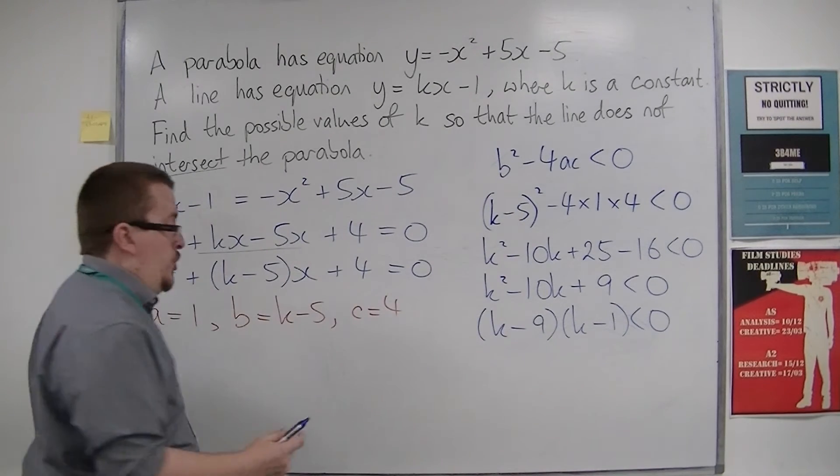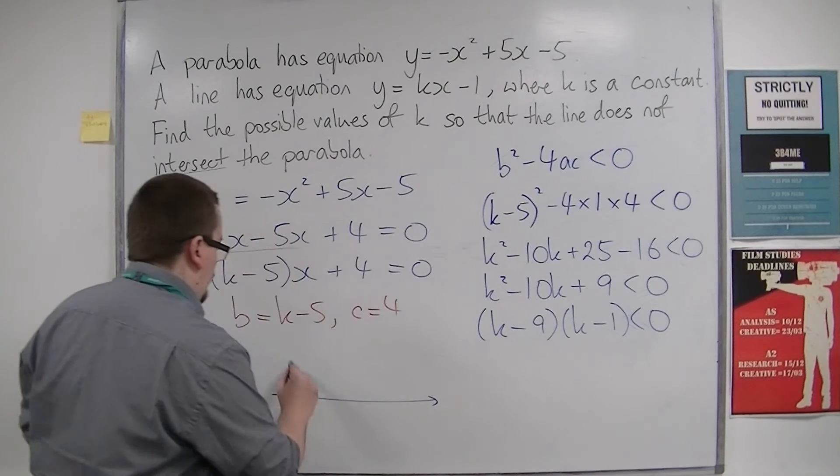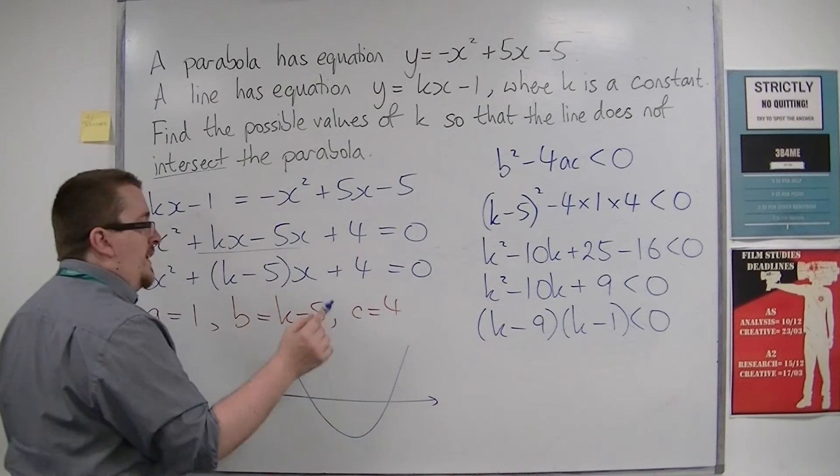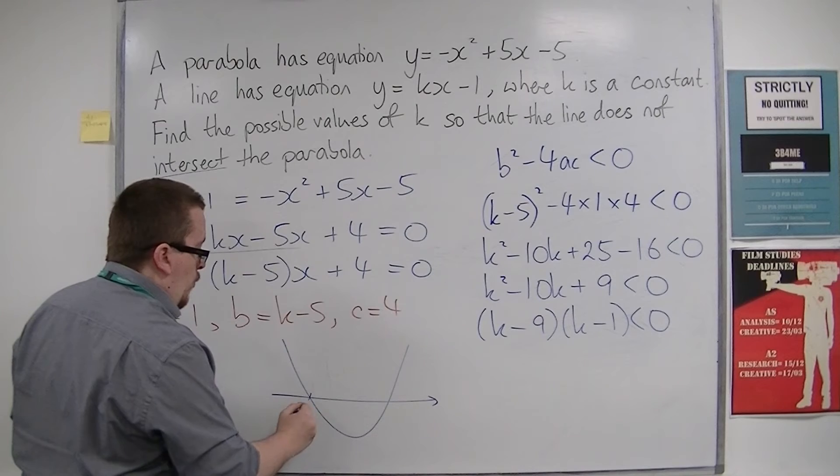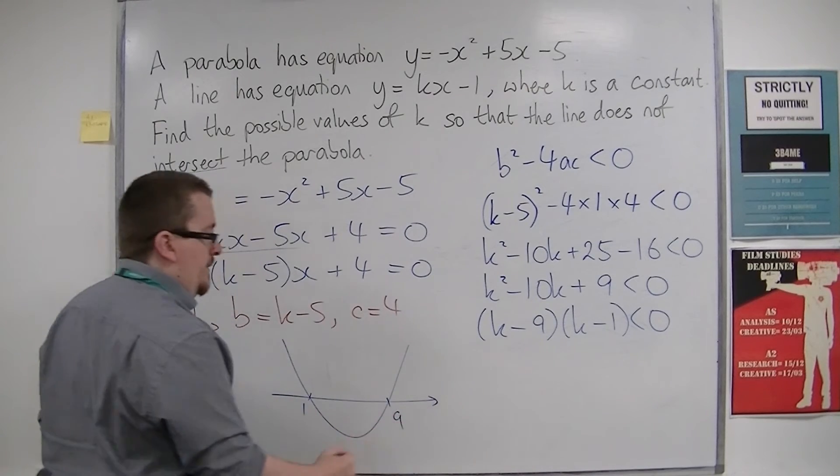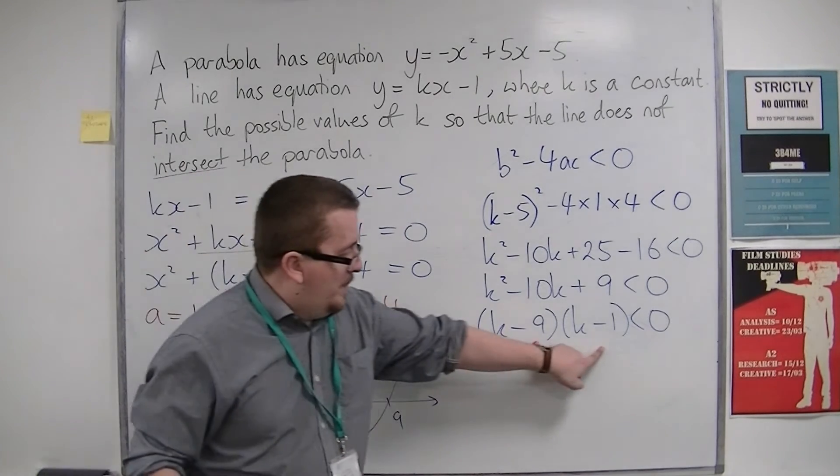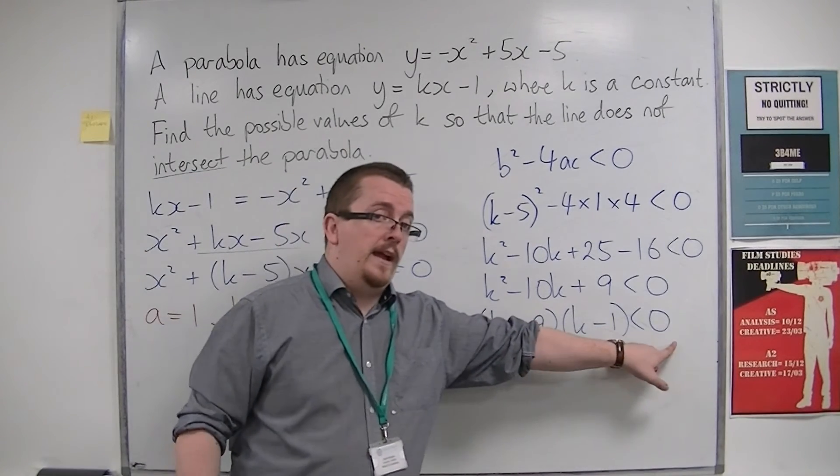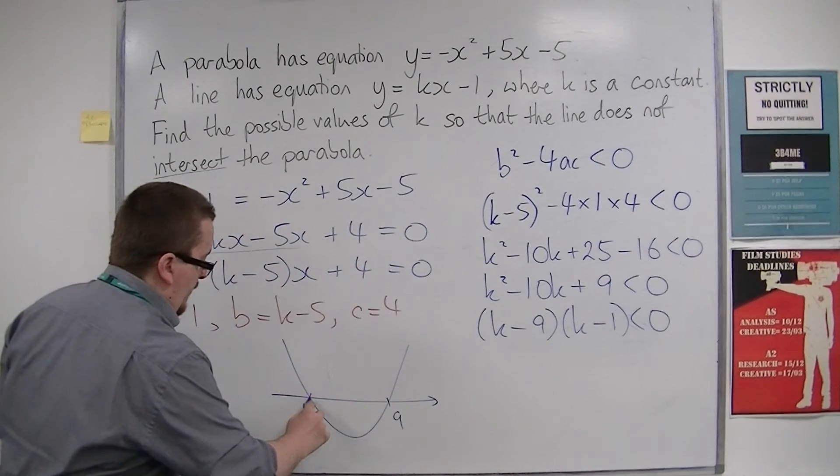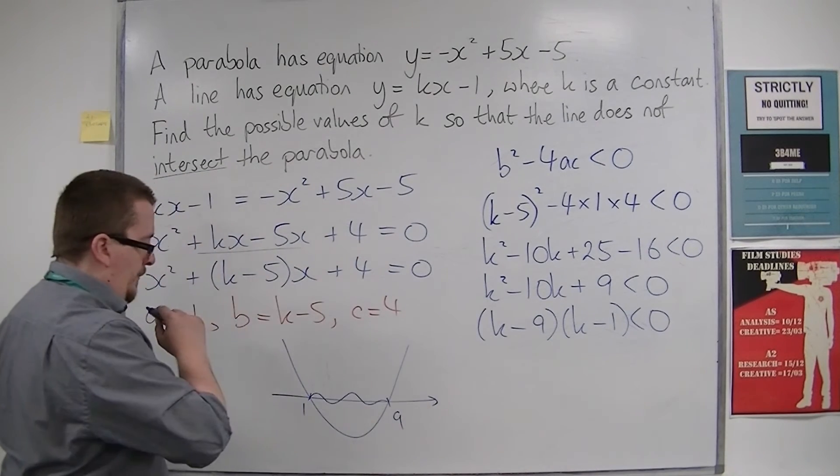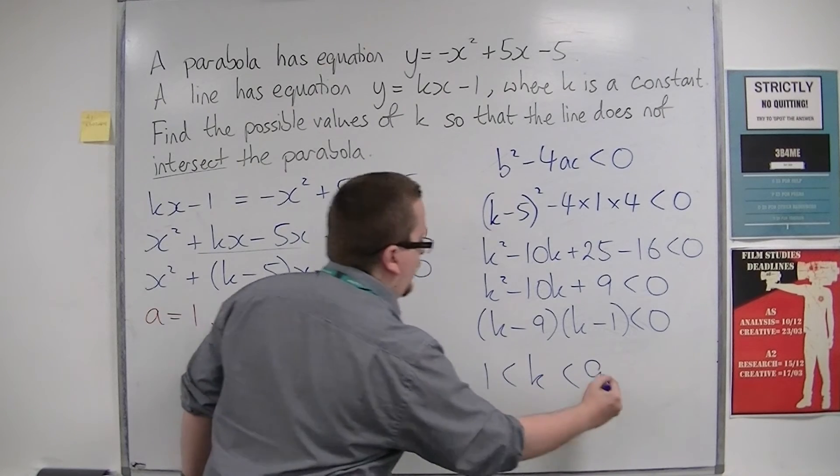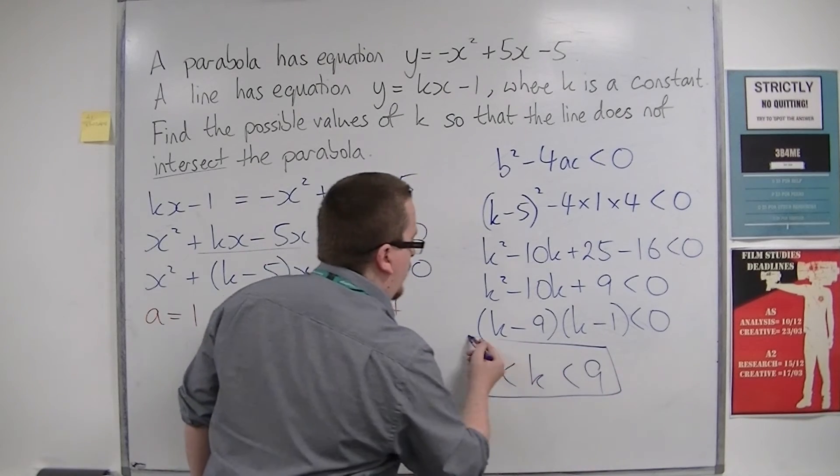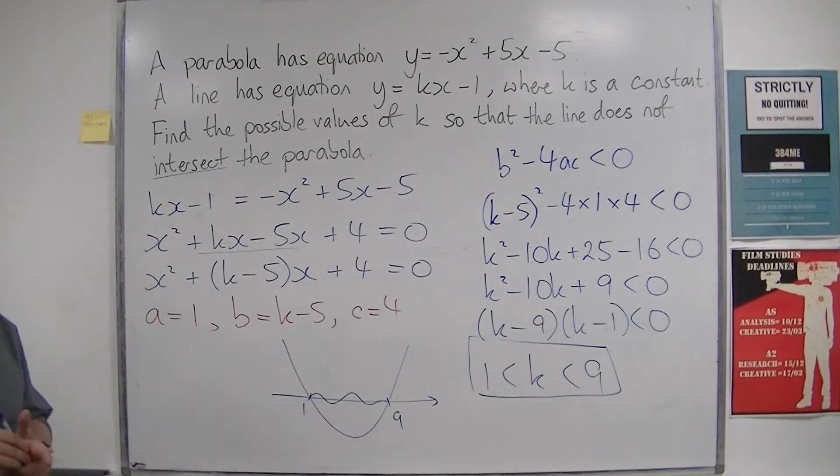And then you can sketch. So for the k-axis, this parabola is going through 1 and 9. So where is the parabola below the k-axis? It's below it between those two values. And so 1 must be less than k is less than 9. And that solves the original problem.